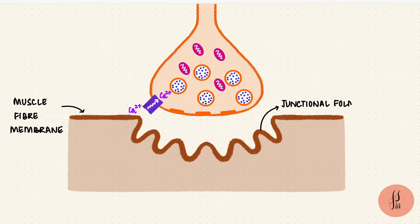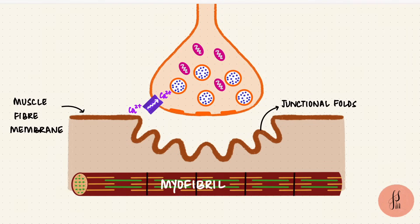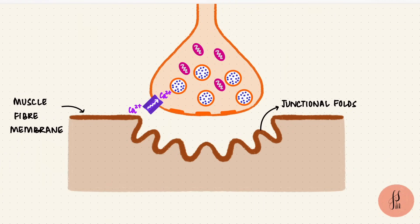The folds increase the surface area. Inside the cell there are myofibrils made up of myofilaments. I'll be talking about this more when I go over muscle contraction, but right now we just need the surface.